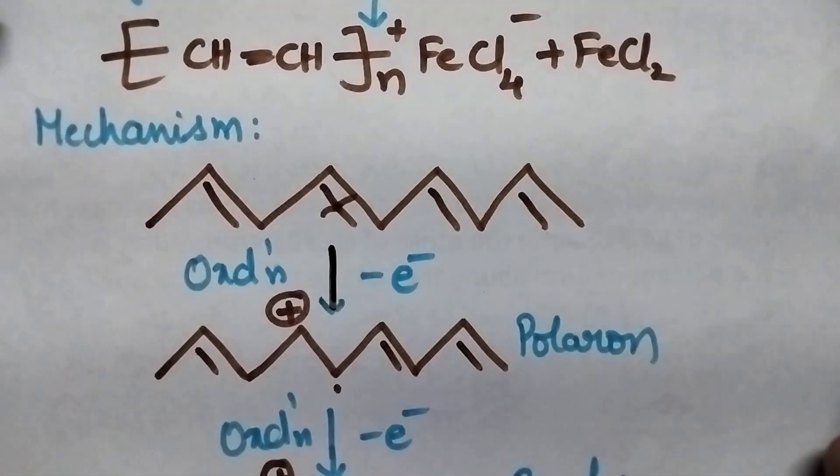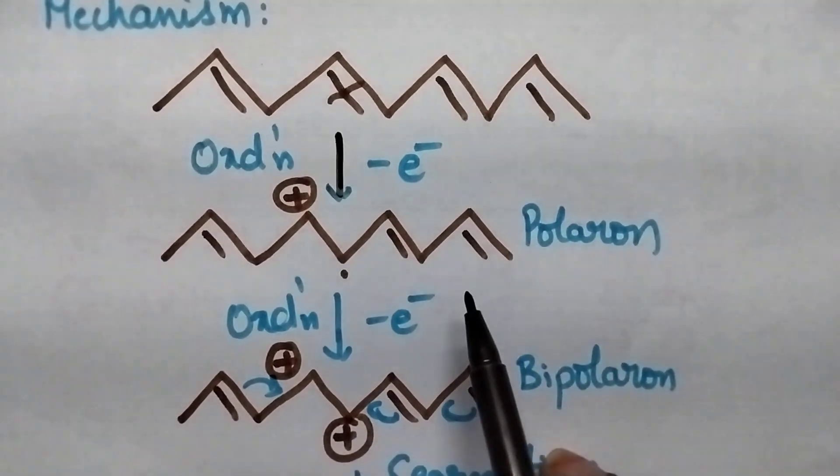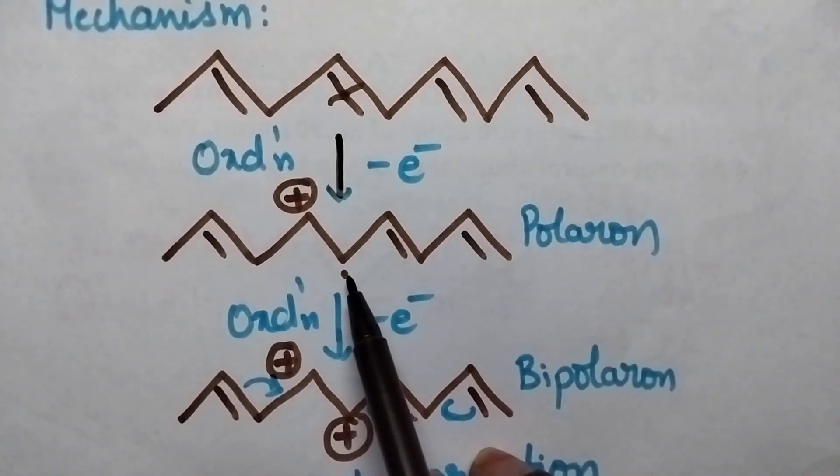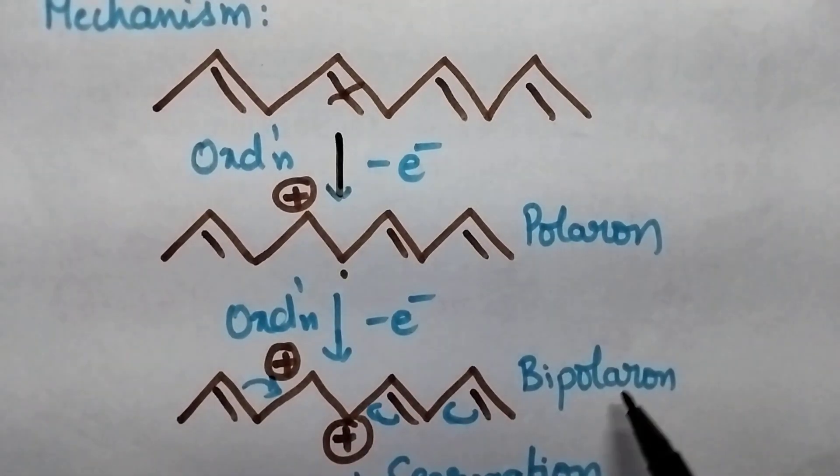In the second step also, it undergoes oxidation. With the result, one more electron will be removed. The second electron will be removed from this ion, and then it results in the formation of bipolaron.